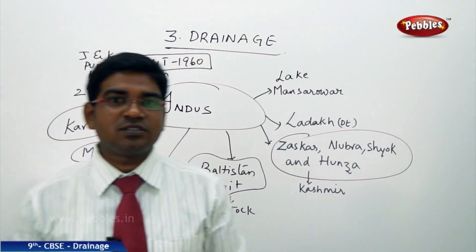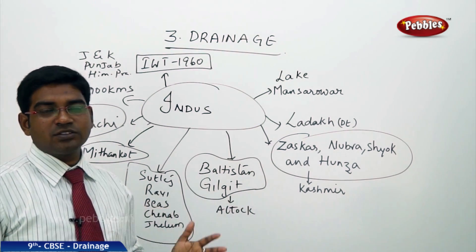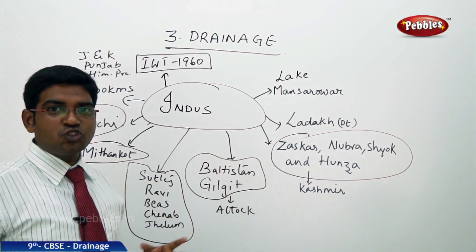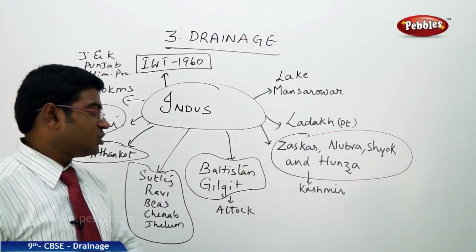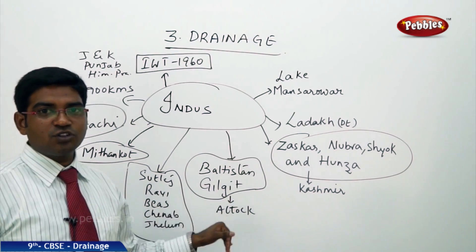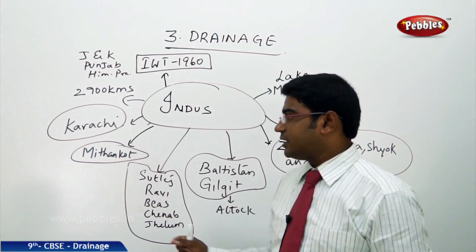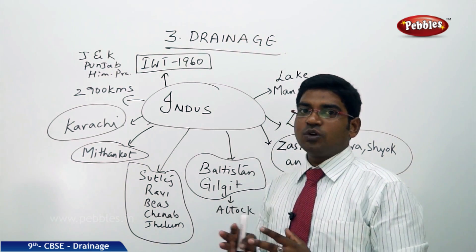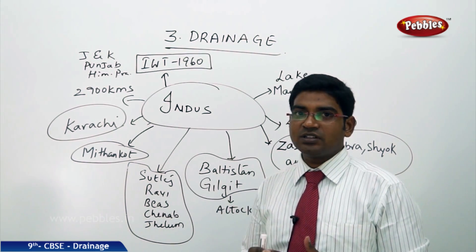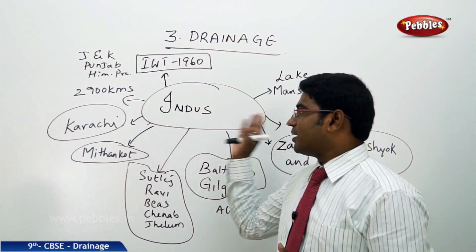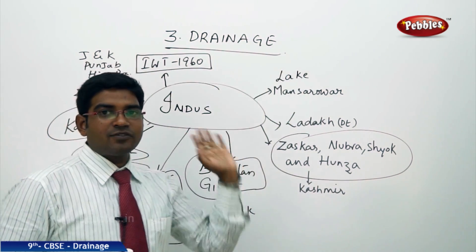In summary, Indus starts its journey at Lake Mansarovar in Tibet, enters India in the westward direction into the Ladakh district, joins tributaries Zanskar, Nubra, Shyok, and Hunza in the Kashmir region, passes through Baltistan and Gilgit, enters Atok, gains tributaries Sutlej, Ravi, Beas, Chenab, and Jhelum, then enters Pakistan at Mithankot, flows southward, and joins the Arabian Sea east of Karachi, covering nearly 2,900 kilometers across three countries.